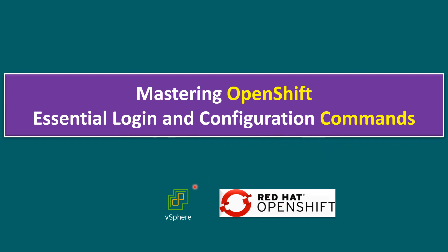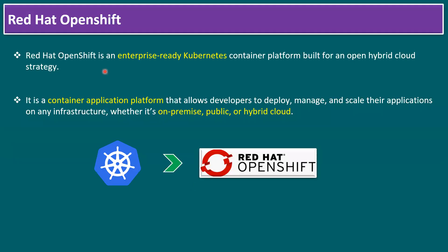In our lab environment, OpenShift is running on a vSphere platform — that's our main infrastructure platform. Before jumping to the topic, let's quickly recap what Red Hat OpenShift is. Red Hat OpenShift is an enterprise-grade Kubernetes container platform built for an open hybrid cloud strategy. It's a container application platform that allows developers to deploy, manage, and scale their applications on any infrastructure — whether on-premises, public, or hybrid cloud, even multi-cloud environments.